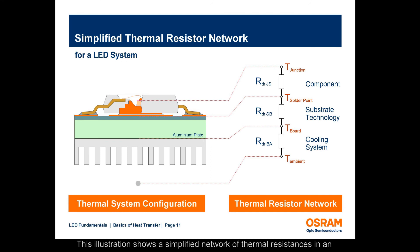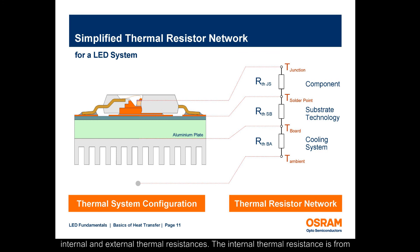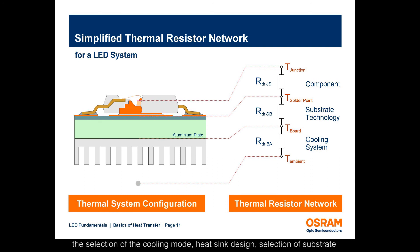This illustration shows a simplified network of thermal resistances in an LED system. The total thermal resistance of the system can be divided into internal and external thermal resistances. The internal thermal resistance is from the junction to the package of the LED. The external thermal resistance includes the selection of the cooling mode, heat sink design, selection of substrate material, and attachment process.